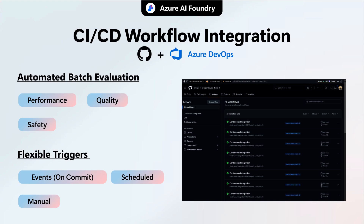CI/CD integration supports automatic batch evaluation triggers on every commit, scheduled intervals, or manual initiation, matching diverse development cycles. Available as GitHub Actions and Azure DevOps extensions, these tools appear in marketplaces and integrate into agent app templates for easy adoption. A standout is the compare mode, which uses statistical analysis to confirm if a model update genuinely improves performance rather than relying on noisy metrics alone. Evaluation results feed directly into GitHub or the Azure AI Foundry portal, tightening feedback loops and facilitating trustworthy, fast iteration.